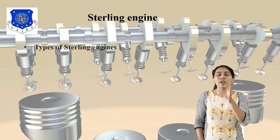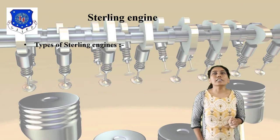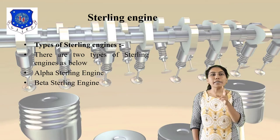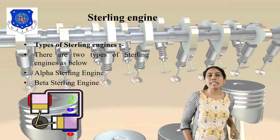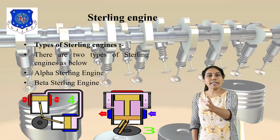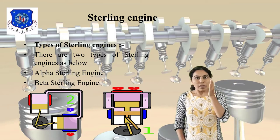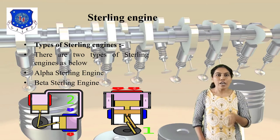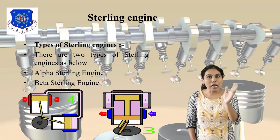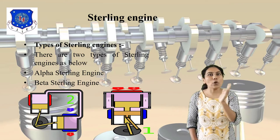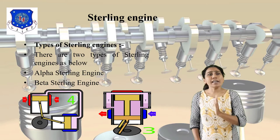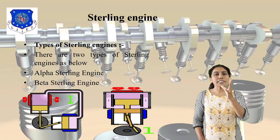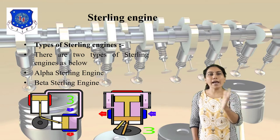Next point — the types of Stirling Engine. There are two types of Stirling Engine. First is the Alpha Stirling Engine, second is the Beta Stirling Engine. You can see the diagram. The Alpha Stirling Engine is a light load application, meaning it is a low power engine. The Beta Stirling Engine is a high load application. You can see the diagram of this Alpha and Beta Stirling Engine.